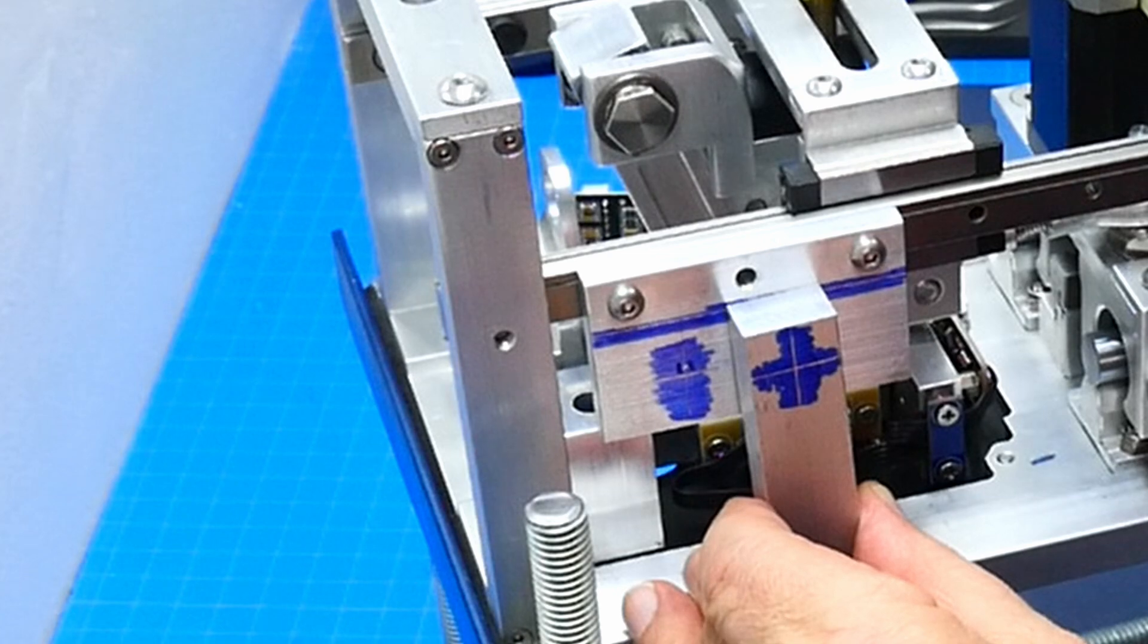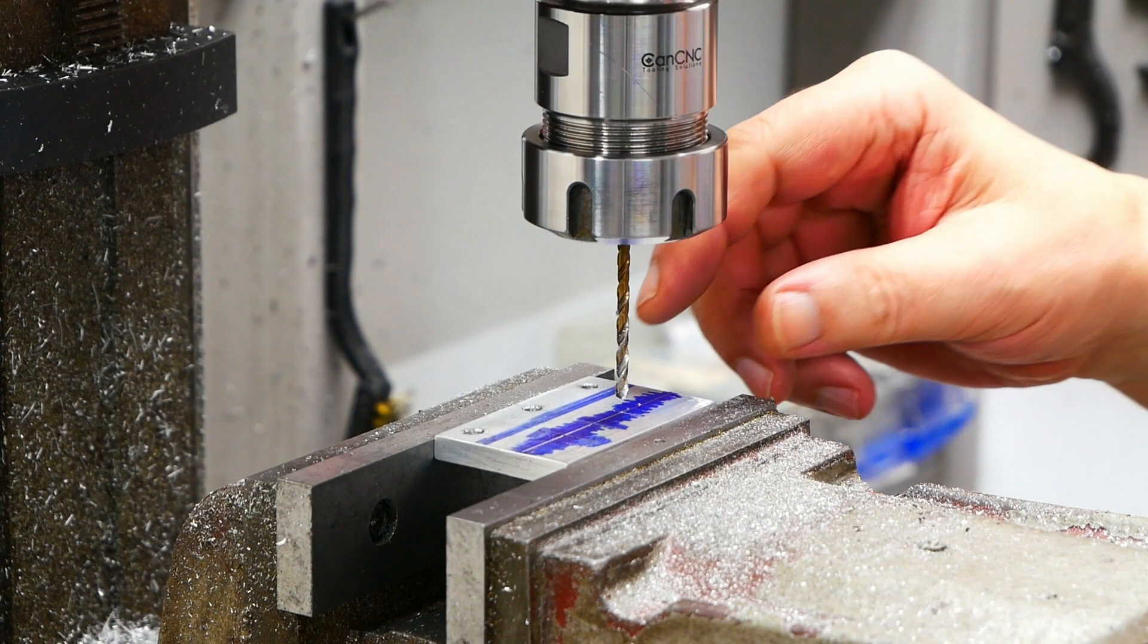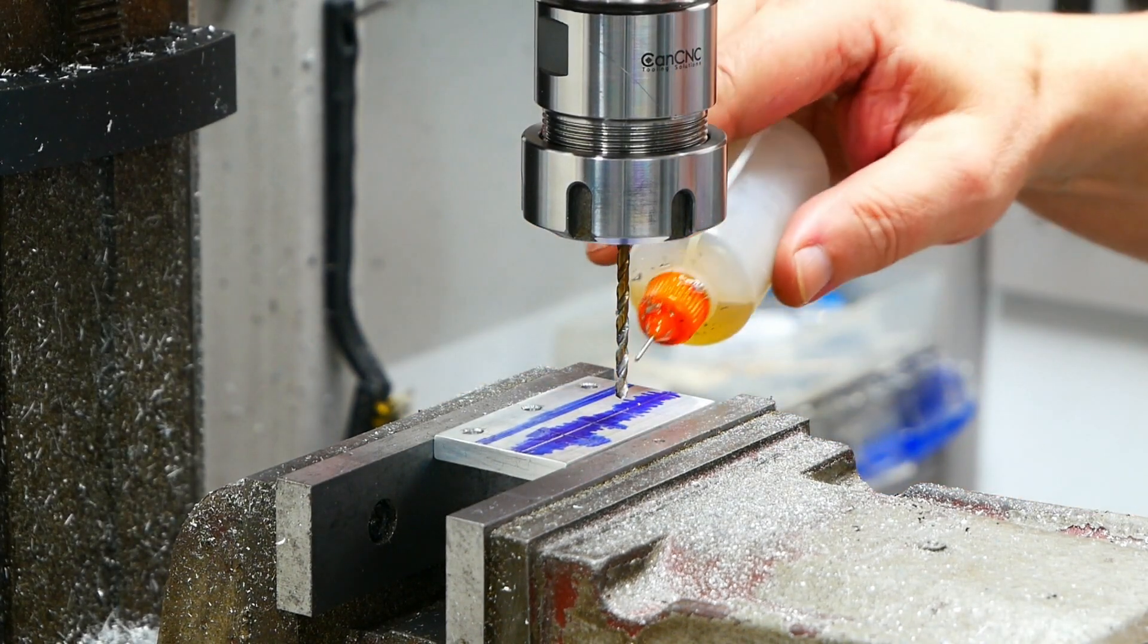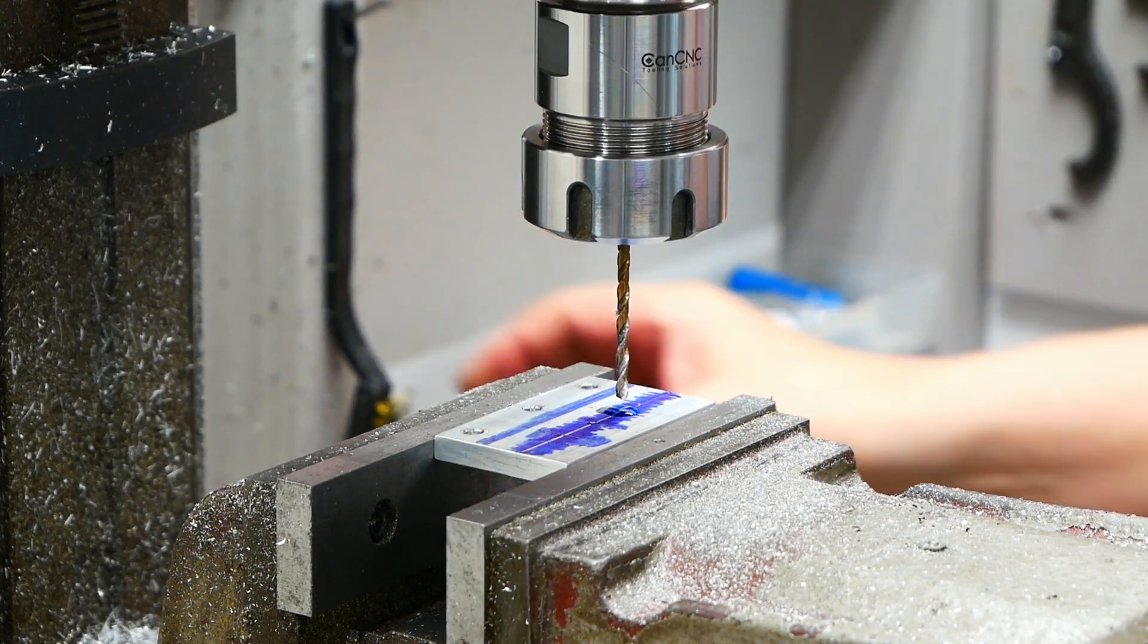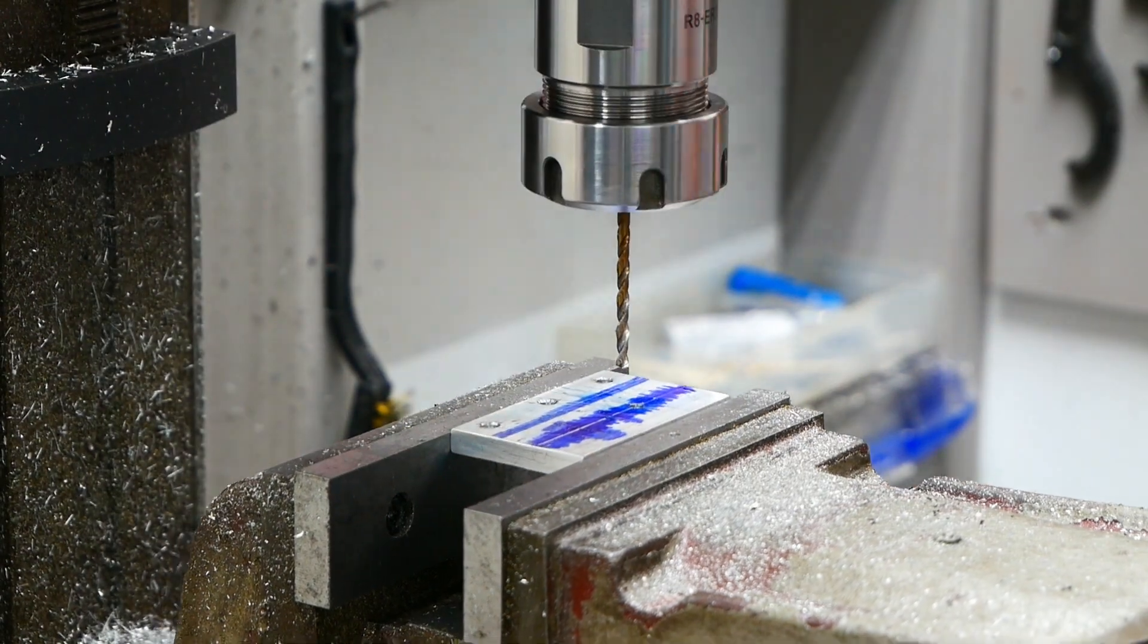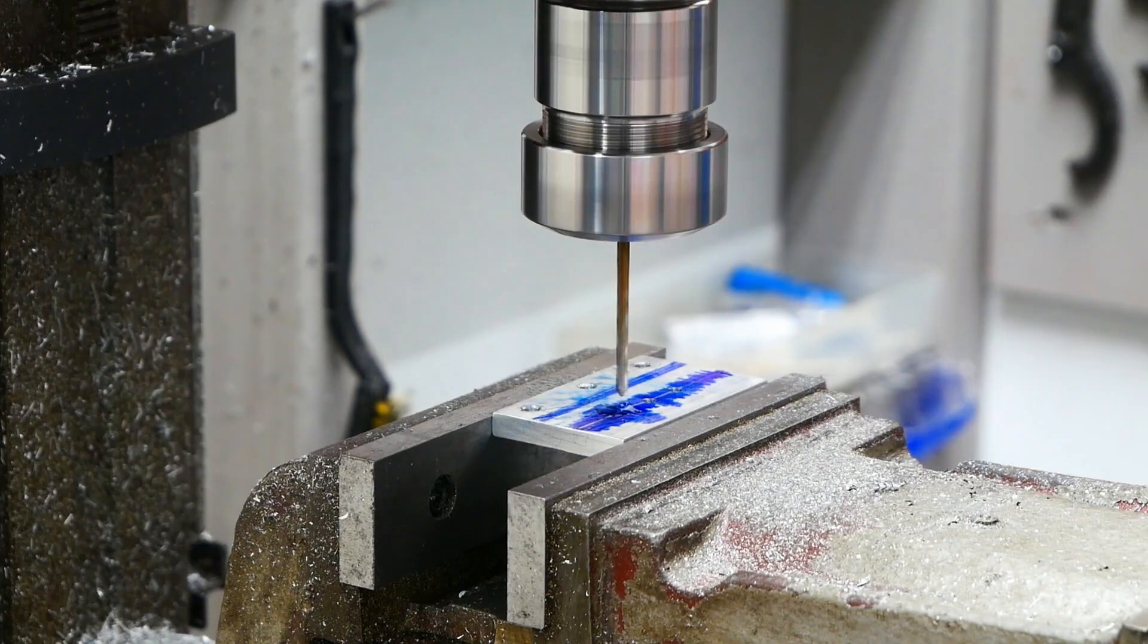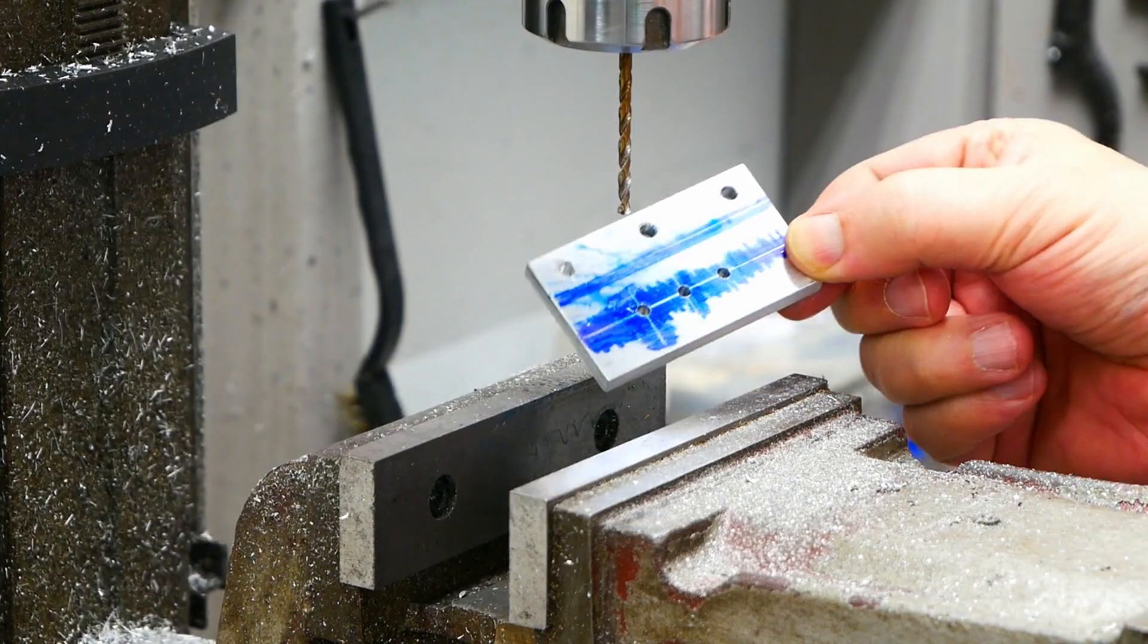Now I'm going to drill the holes for the lever mounting plate. I'm going to make three holes in here. This way I have some adjustability if I need it. And if not, well, then I have some extra holes. And then we're going to tap them for M6.